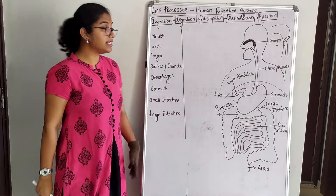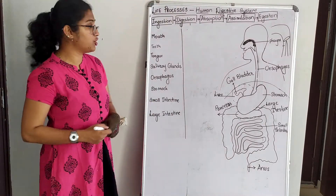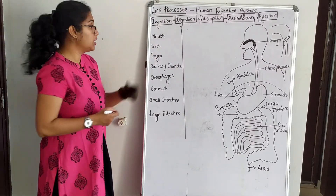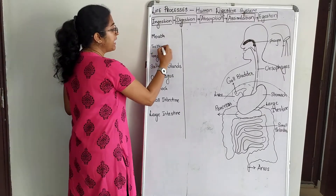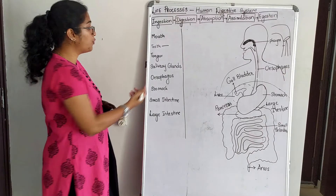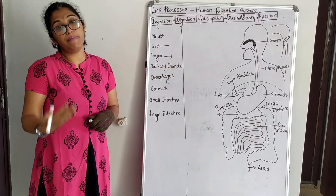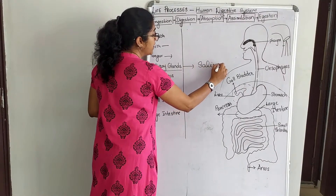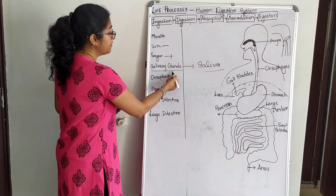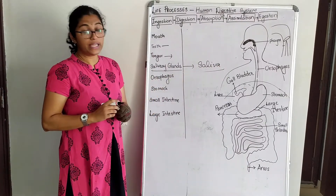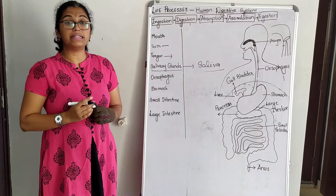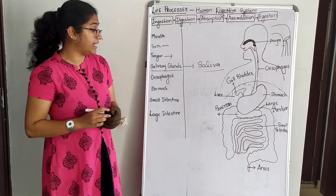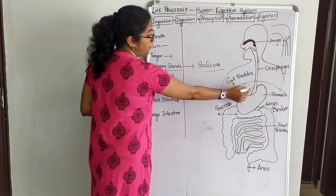Now let us see how these organs and glands help us in digestion. The mouth is an organ where we intake food. Once food is taken in, teeth help in cutting and grinding the food. The tongue helps in movement of the food. Salivary glands secrete saliva which helps in moistening the food. The food is then passed through the esophagus.